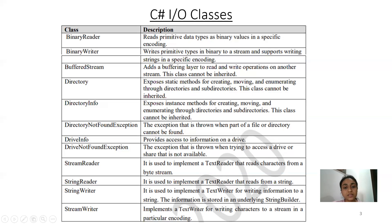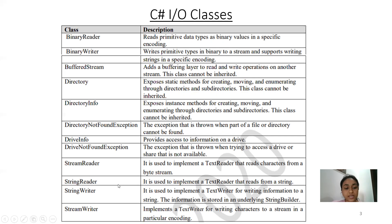Next is Directory Info, which exposes instance methods for creating, moving, and enumerating through directories and subdirectories. Next is Directory Not Found Exception — the exception that is thrown when part of a file or directory cannot be found. Next is Drive Info, which provides access to information on a drive. Next is Stream Reader, used to implement a text reader that reads characters from a byte stream. Similarly, Stream Writer class is used for performing writing purpose.